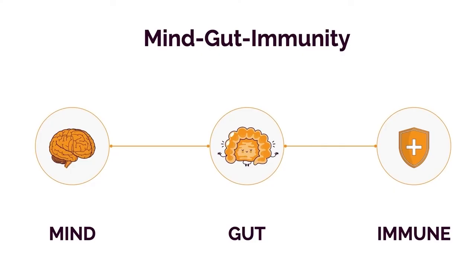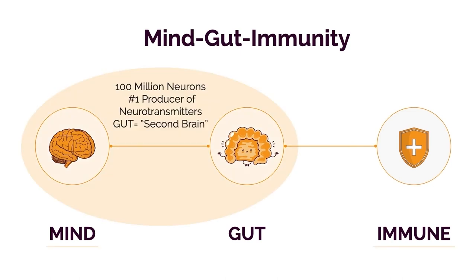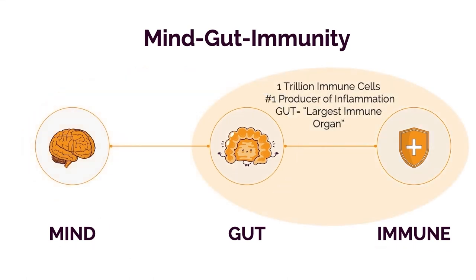The gut contains 100 million neurons and it's the largest producer of neurotransmitters in the body — that's why it's earned the nickname 'the second brain.' It's also host to 1 trillion immune cells, which means a majority of your immune system is actually housed in the gut. The most important and relevant principles we can leverage are the Big Five epigenetic environmental triggers: diet, digestion, sleep, stress, and exercise.